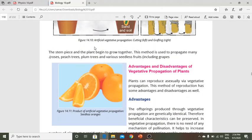The stem piece and plant grow together. This method is used to propagate many roses, peach trees, plum trees, and various seedless fruits.